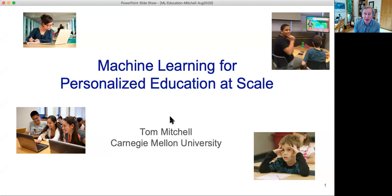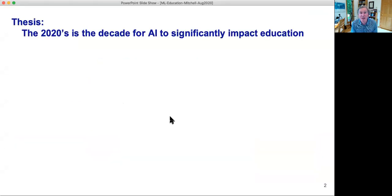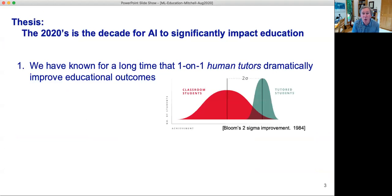My motivation is pretty simple. I think that this decade is the decade when finally we have an opportunity for AI to make a significant impact on education. My reasoning is that, number one, we have known for a long time, for decades, that one-on-one tutoring by humans to students has a tremendous impact on their education outcome.